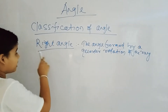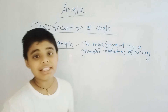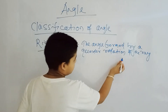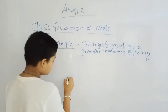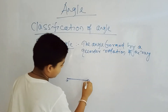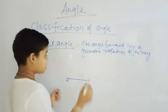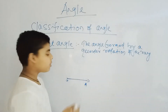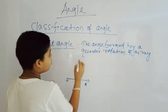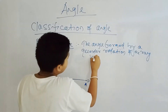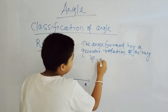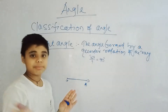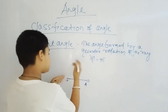Now we are discussing about the right angle — this is another classification of angles. A right angle is the angle formed by a quarter rotation of the ray. We have discussed that if it is a half rotation it will be a straight angle, but if it is a quarter rotation then it will be one-fourth, which is 90 degrees.